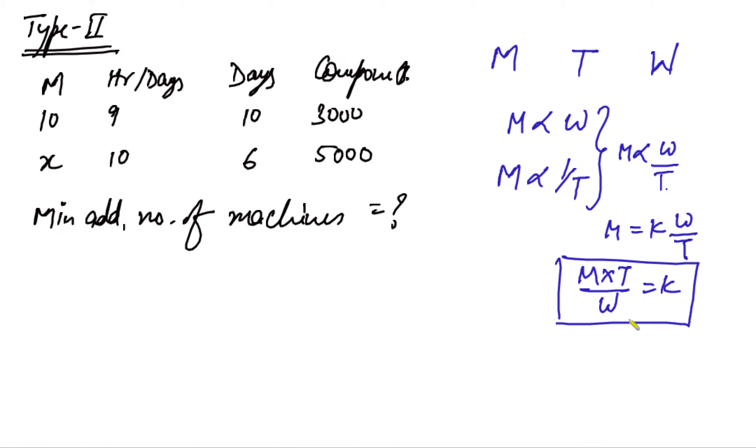How do we use this expression? This expression means that in the first scenario, the ratio M₁T₁/W₁ will be same as M₂T₂/W₂ in the second scenario. Let's apply this concept in this question. M₁ in this case is 10 because there are 10 machines initially.